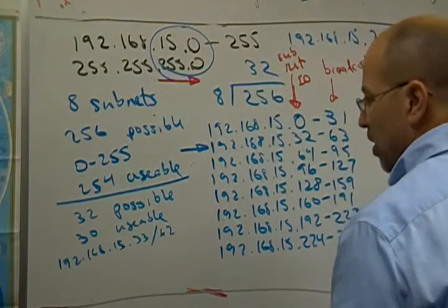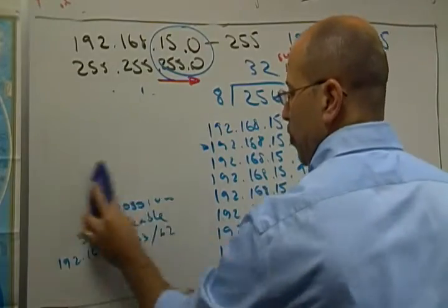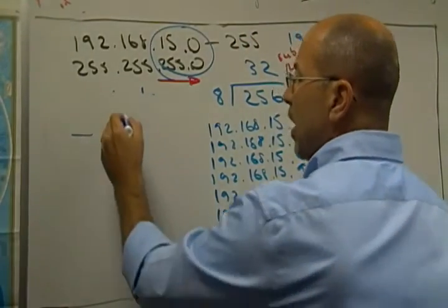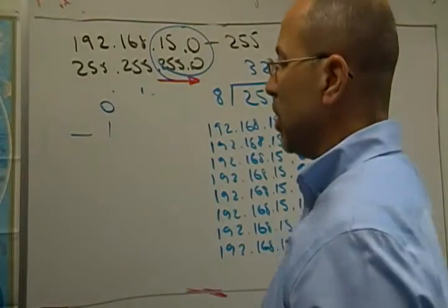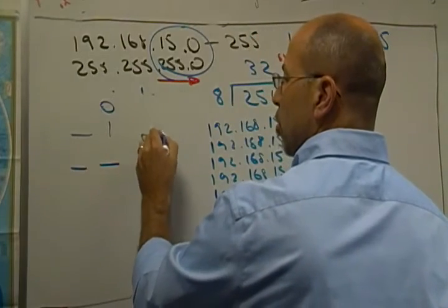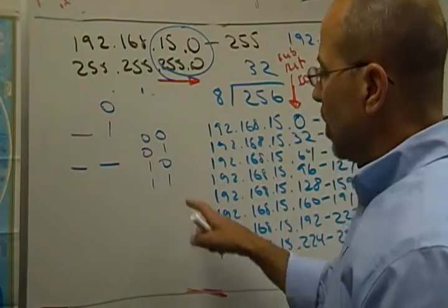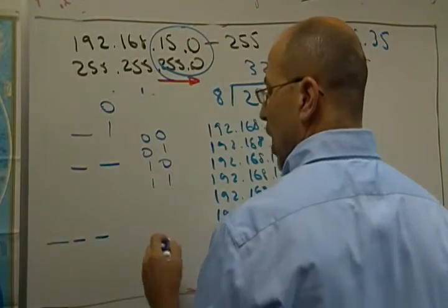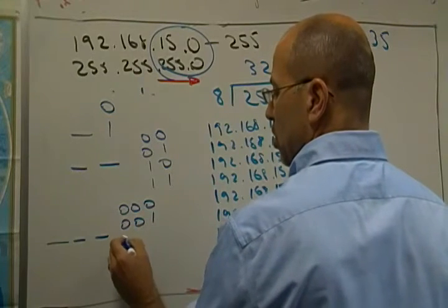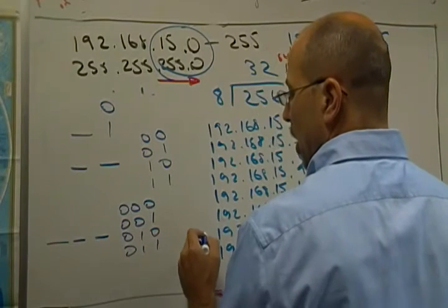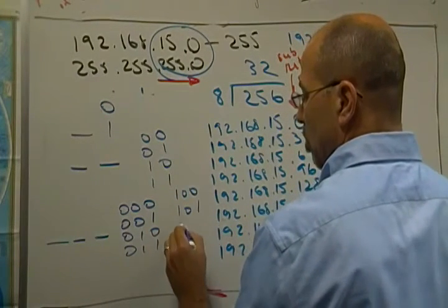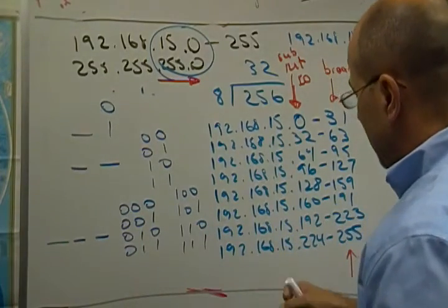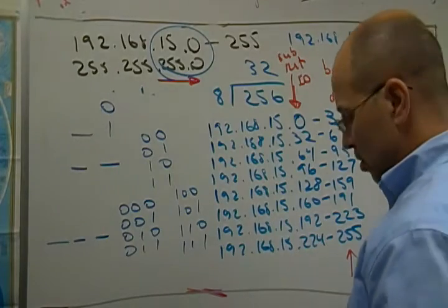With 1 bit you can put either 0 or 1 — that's 2 possibilities. With 2 bits: 00, 01, 10, or 11 — that's 4 possibilities. With 3 bits: 000, 001, 010, 011, 100, 101, 110, 111 — those are the 8 possibilities. So 3 is the number of bits I need to steal to create my 8 subnets.